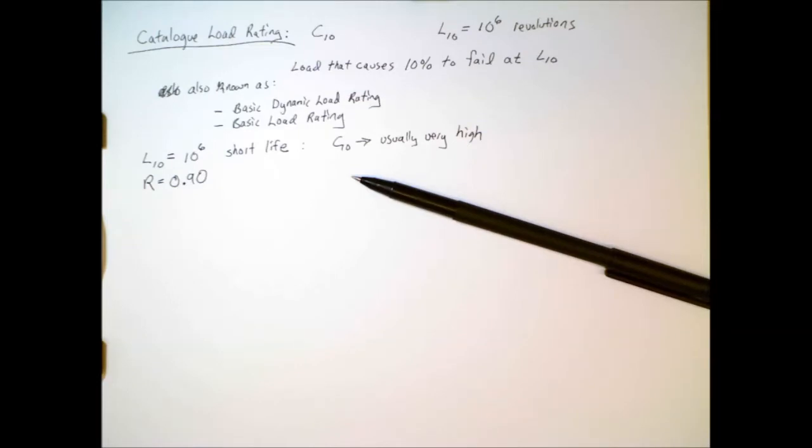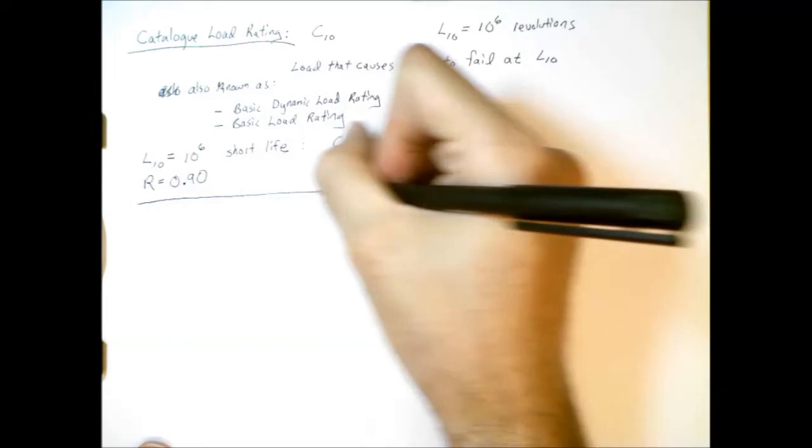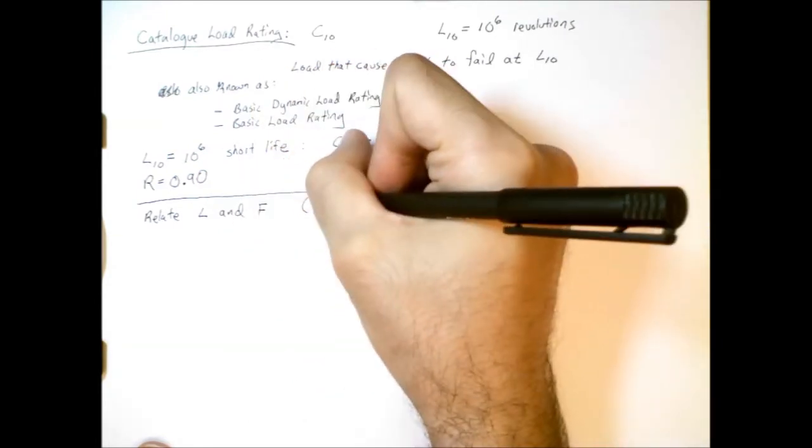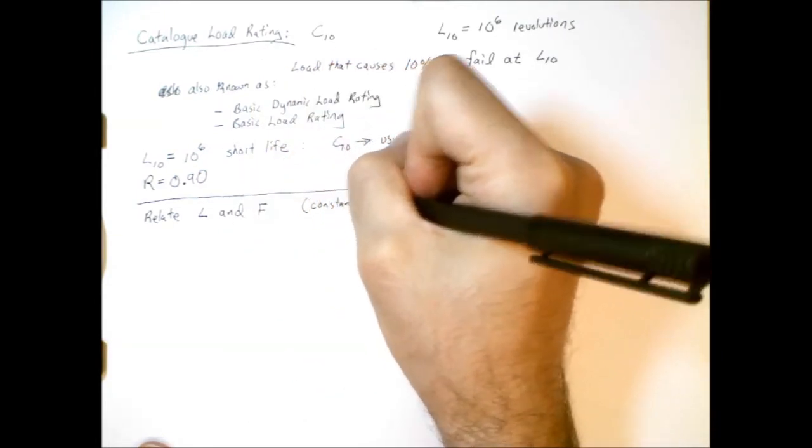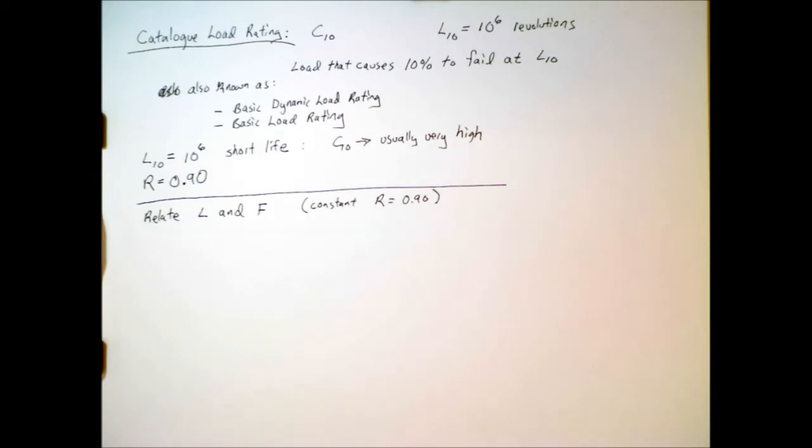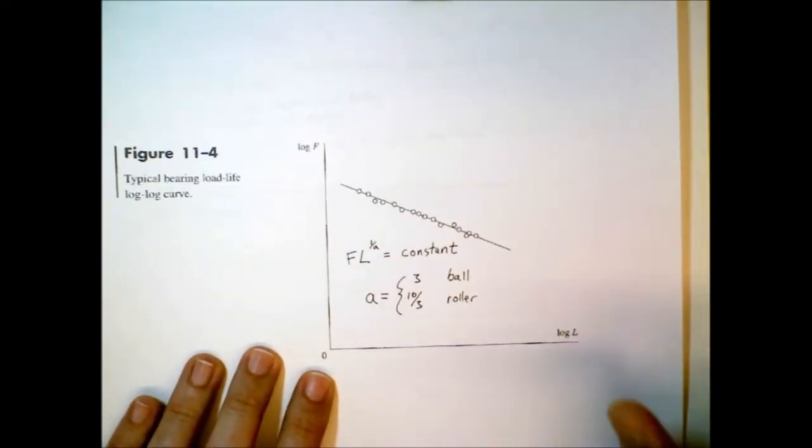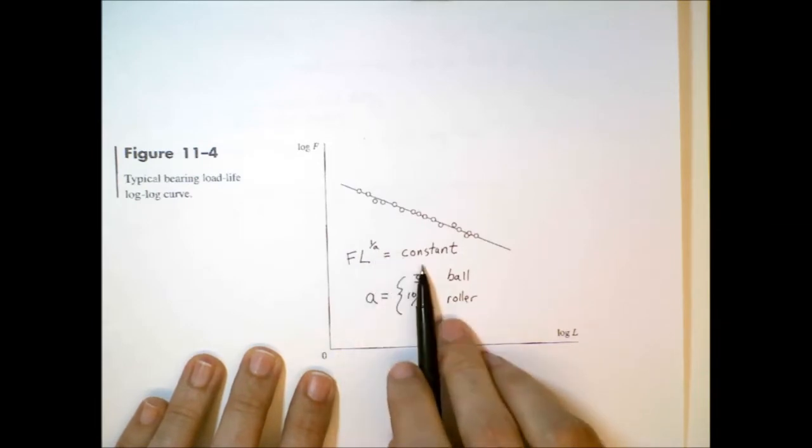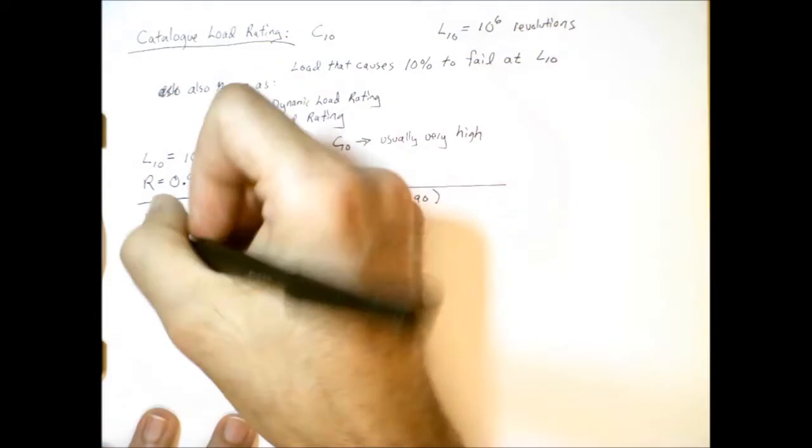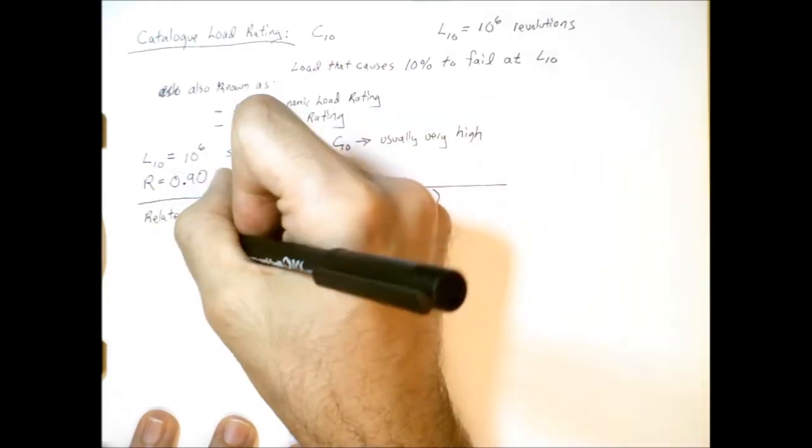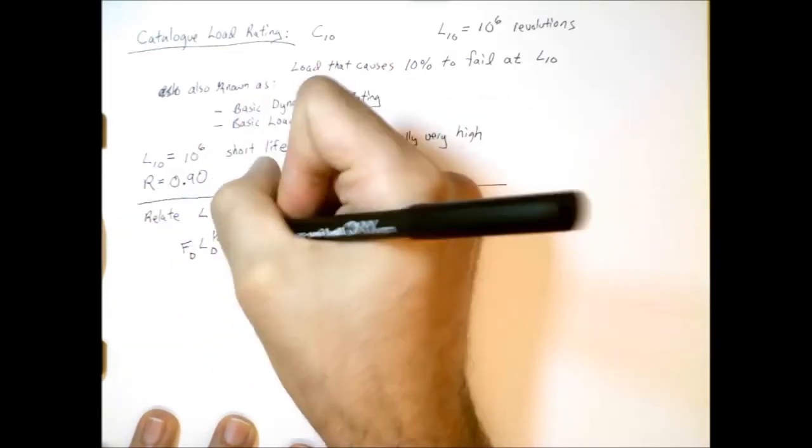So we're going to talk about a few different formulas that allow us to do that. And in the first case, we're going to look at just how do we relate life and force. And here we're going to assume a constant reliability of 90%. So we've already looked at this figure. We've noticed that there's this strong relationship between force and life. So force times life to the power of 1 over A is always equal to a constant.